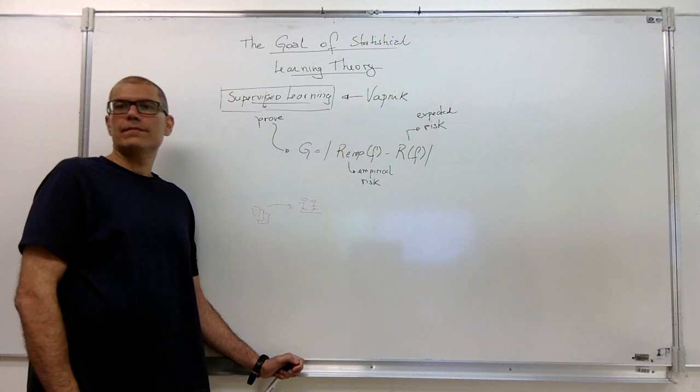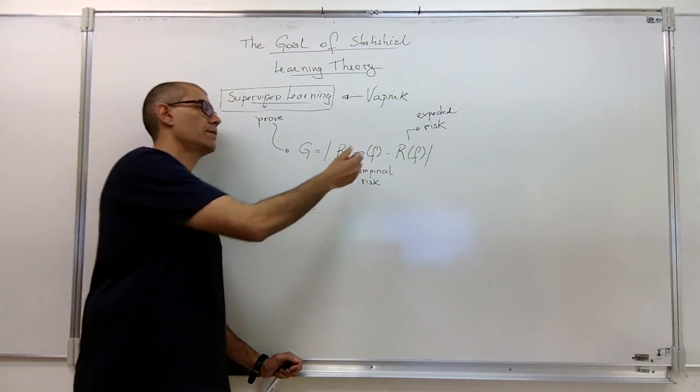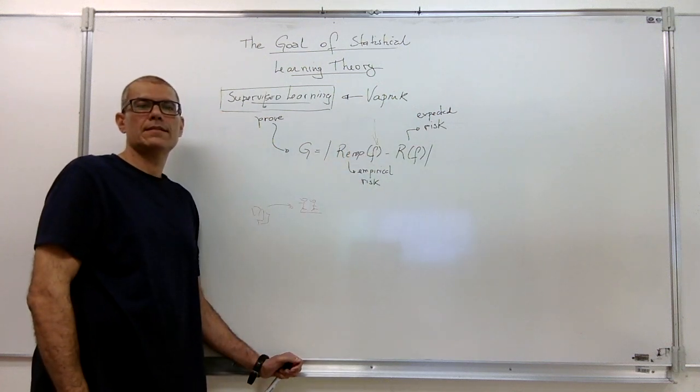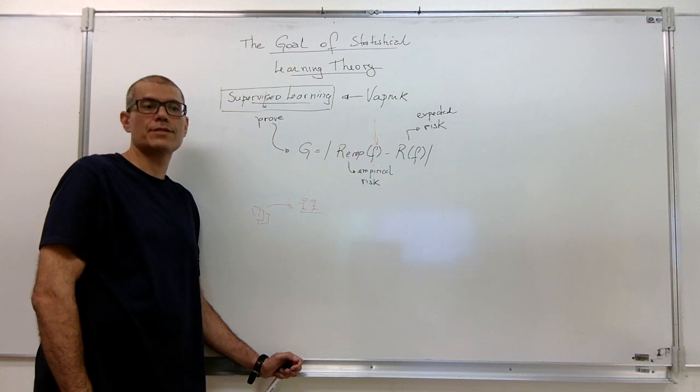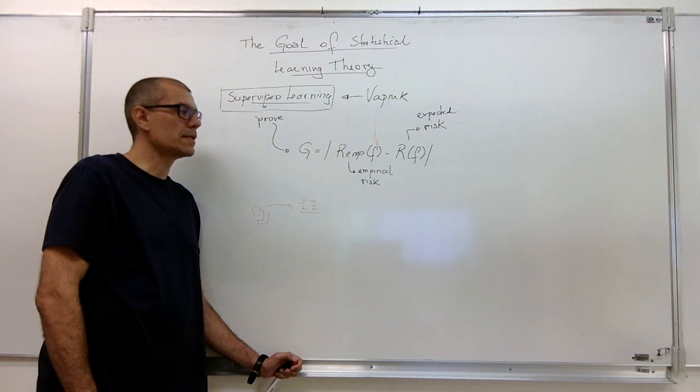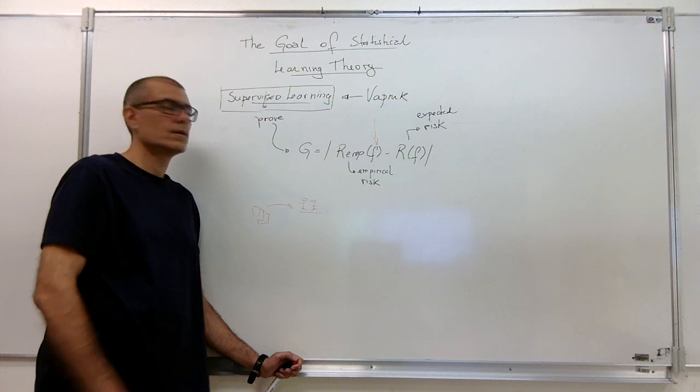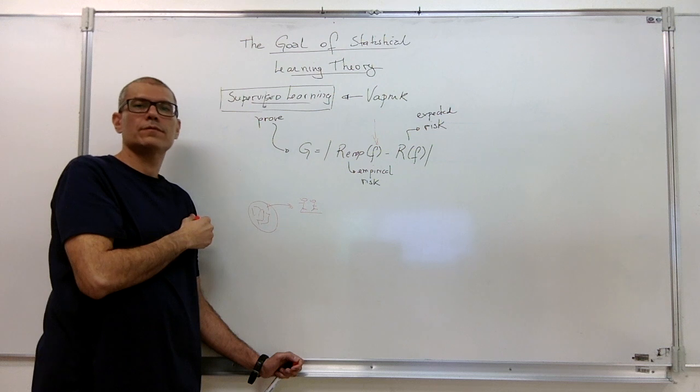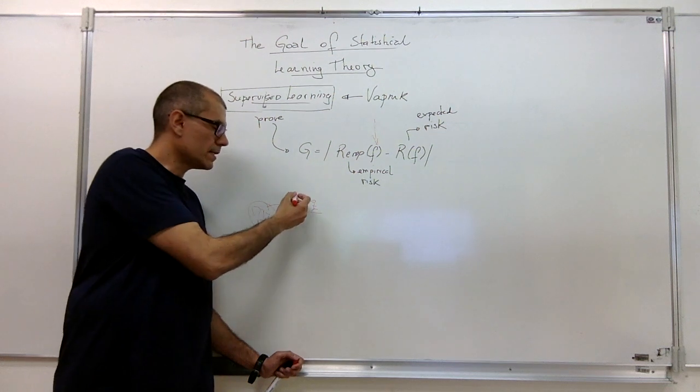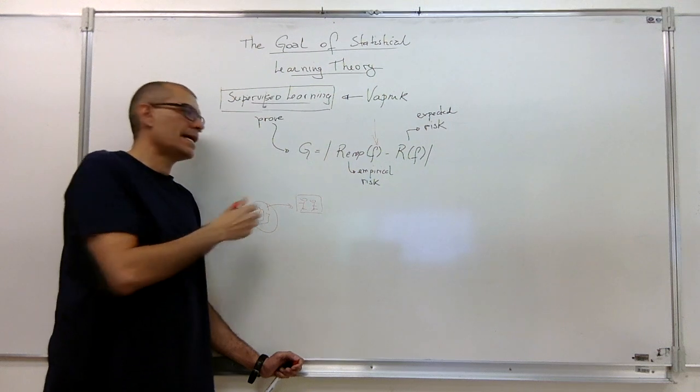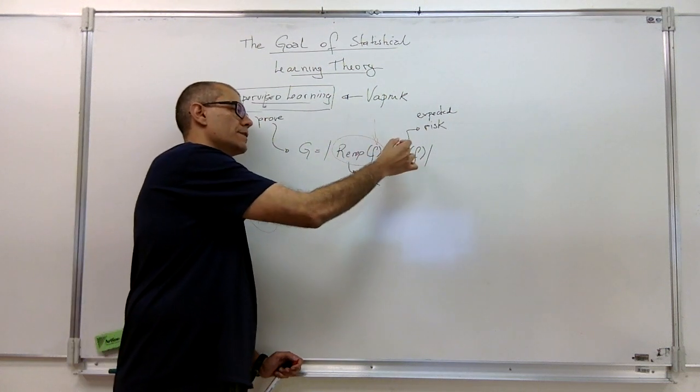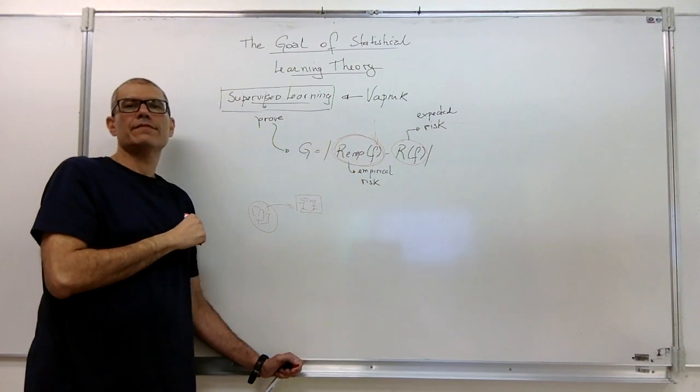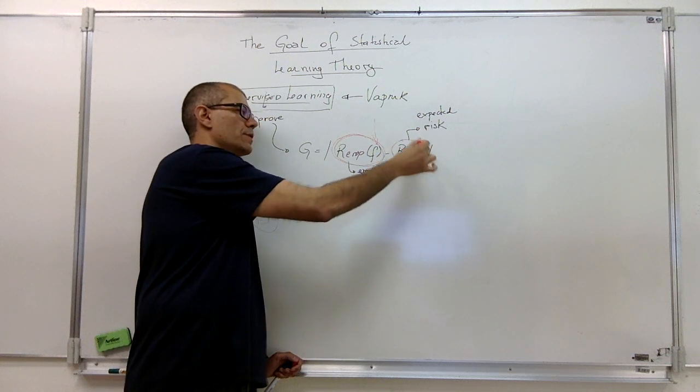And they started learning from those books and they were capable of somehow coming up with a model F. That F, that classifier, that regression function, is basically a model to represent knowledge. So if they were capable of building up a model out of those books, they can test that model in the sample, but also outside of the sample. So this guy here is the same as testing in a given sample. This is the same as testing in real-world conditions.